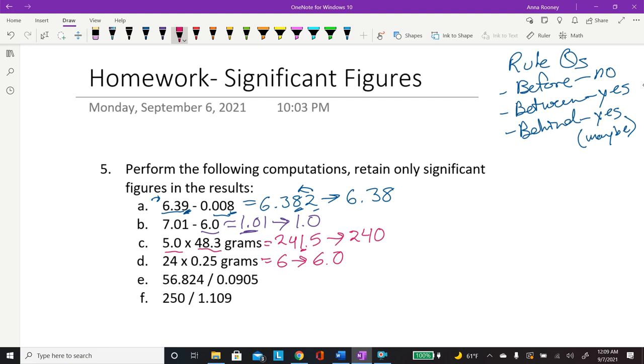So this one is 56.824 divided by 0.0905. So when you take this one, you're gonna get 627.8895027 dot dot dot dot dot dot. It's just gonna go on forever. So you look at the sig figs. This one has 5. This one has 3. So you're gonna go to the third one. And so you're gonna round from that number to this number. So it's 2, er, 628 for that one.